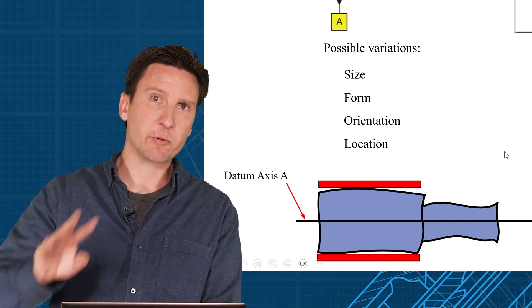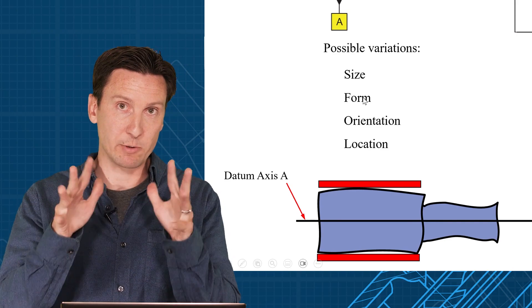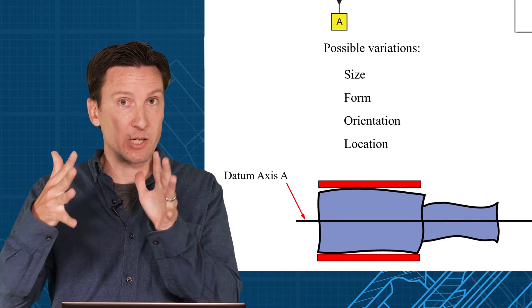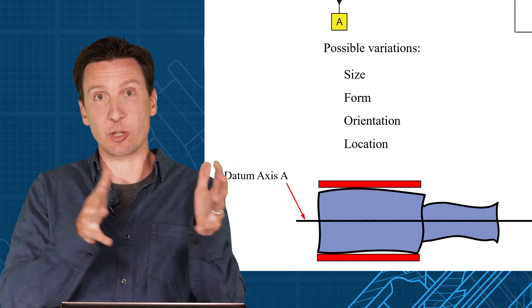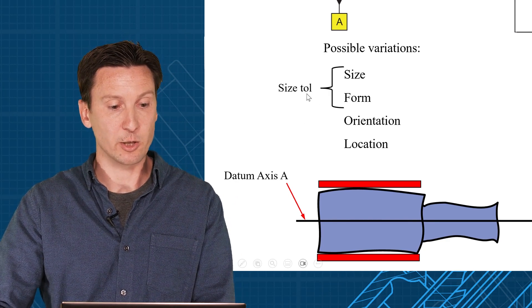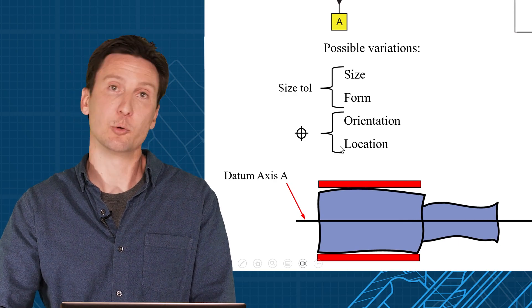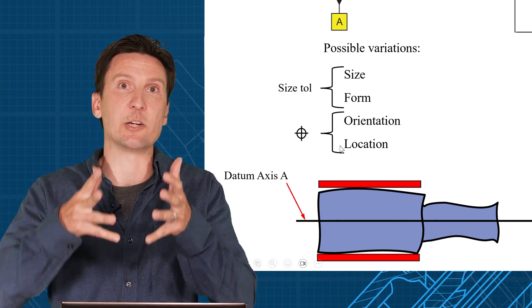If you want to talk about the four possible variations you could have, remember size, form, the shape of it, the orientation, tip-tilt, and then the location which is the coaxial centering of this piece. So with a position tolerance, you first put a size tolerance on there, control size and form, and then position will loop in to control the orientation and location to that datum.